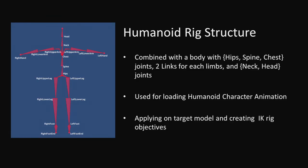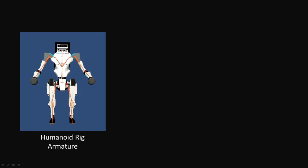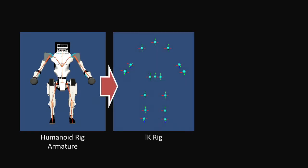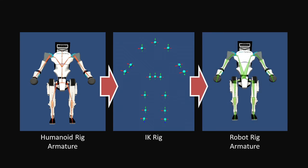We first prepare a humanoid rig with this structure for loading up animation and use for creating motion generation objectives, called IK rig. Here shows the workflow of the retargeting process from a robot model with a humanoid rig to an actual robot rigged model.